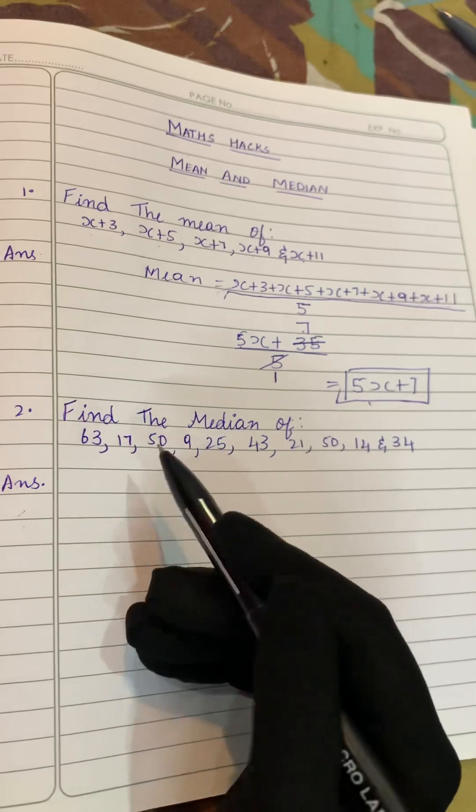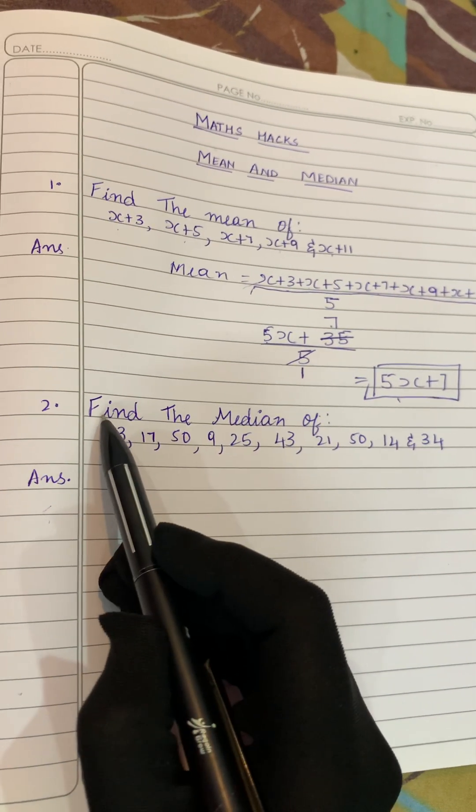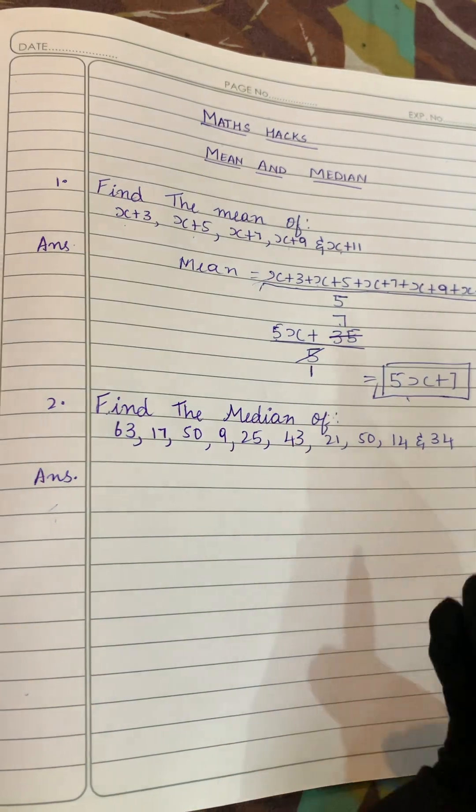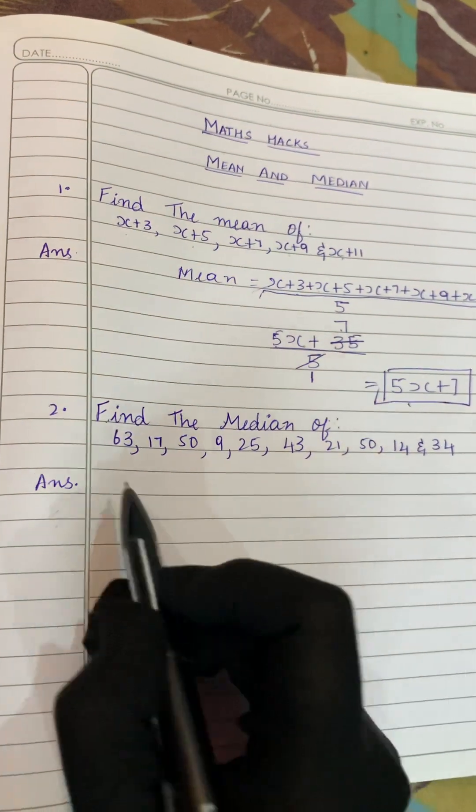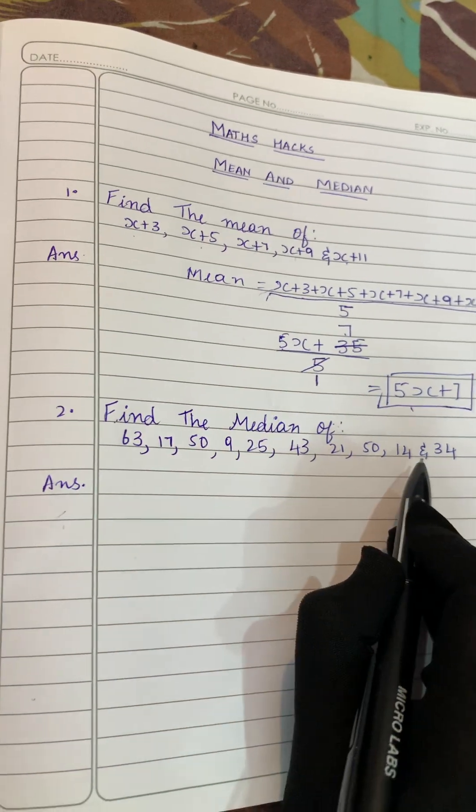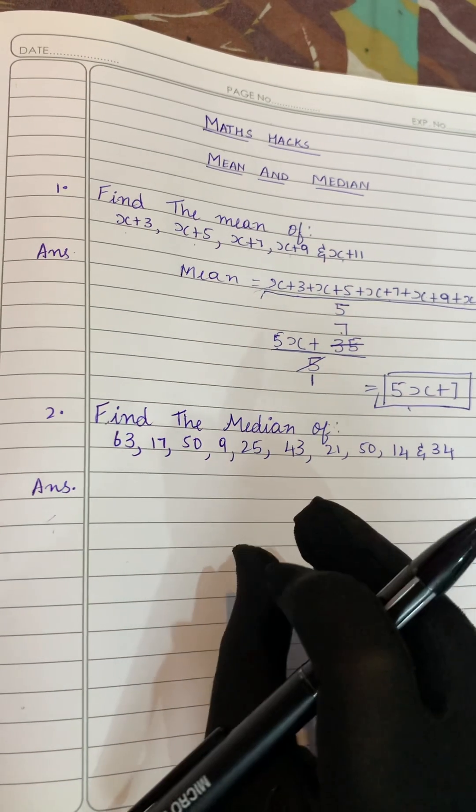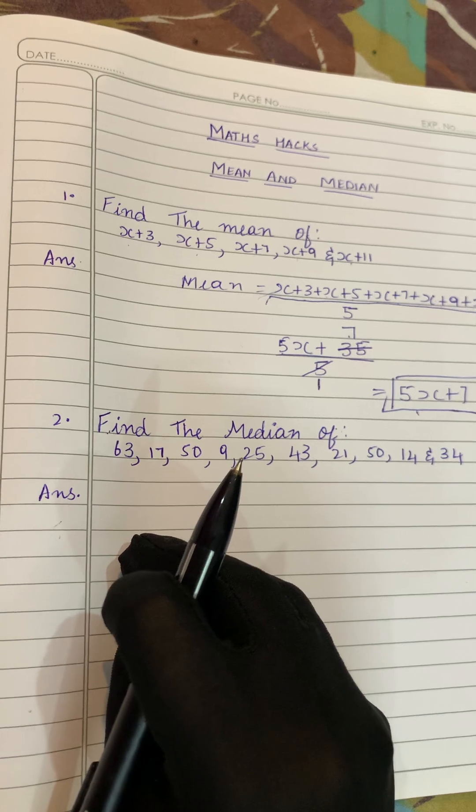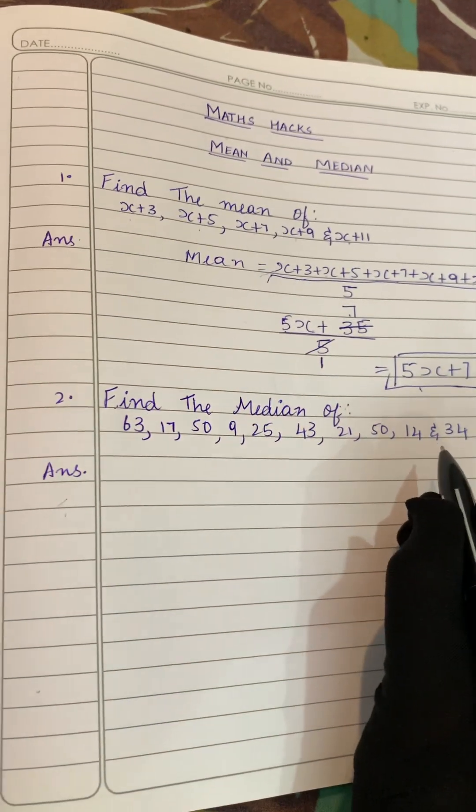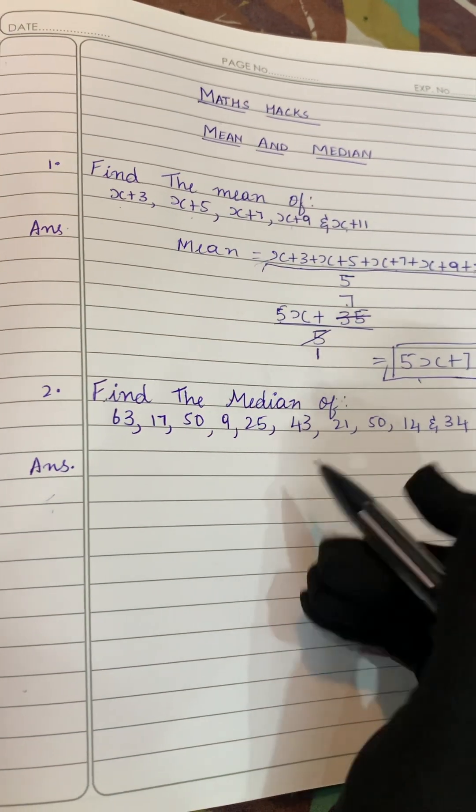Now let's solve the second question. The second question is find the median of the given numbers. These are the numbers. We have to find out the median. Median is middle value, but we will not find out the middle value as is. First we'll arrange these numbers in ascending order. Ascending order is smallest number to the largest number.